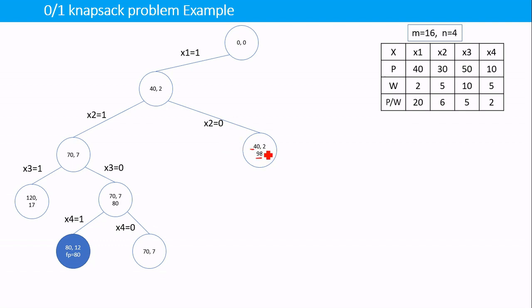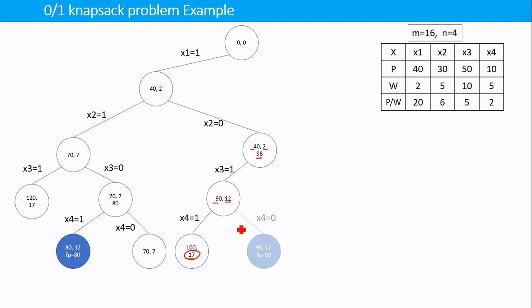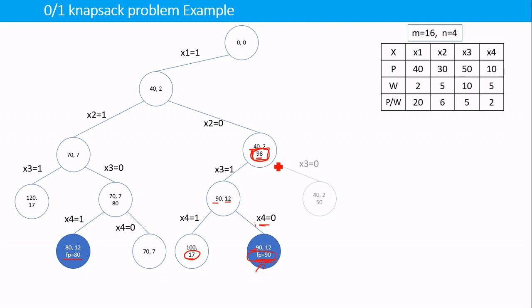With x2=0, current profit is 40. Setting x3=1, profit becomes 90 and current weight becomes 12. Setting x4=1 would give weight 17, exceeding capacity, so we set x4=0. We obtained a profit of 90, which is better than the previous best of 80, so we update the final profit to 90. Backtracking to try x3=0, we would get only profit 50, which is less than 90, so we kill that node and backtrack.